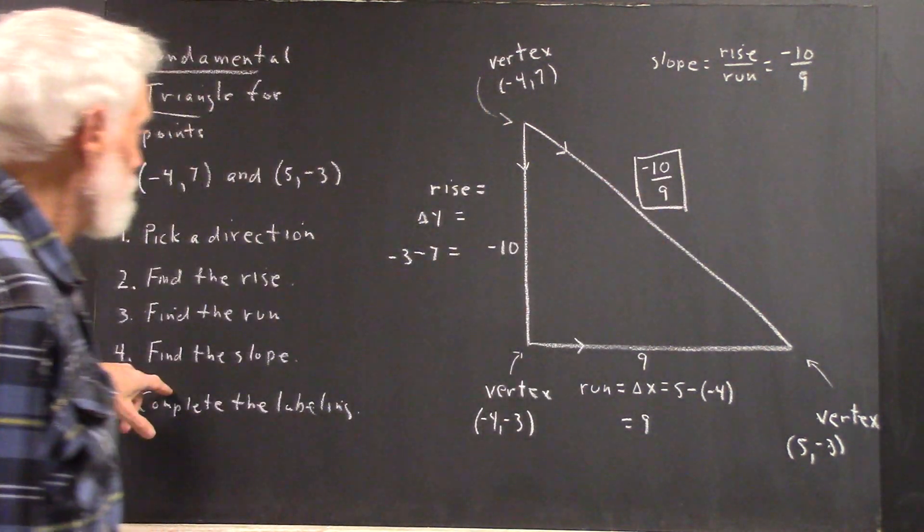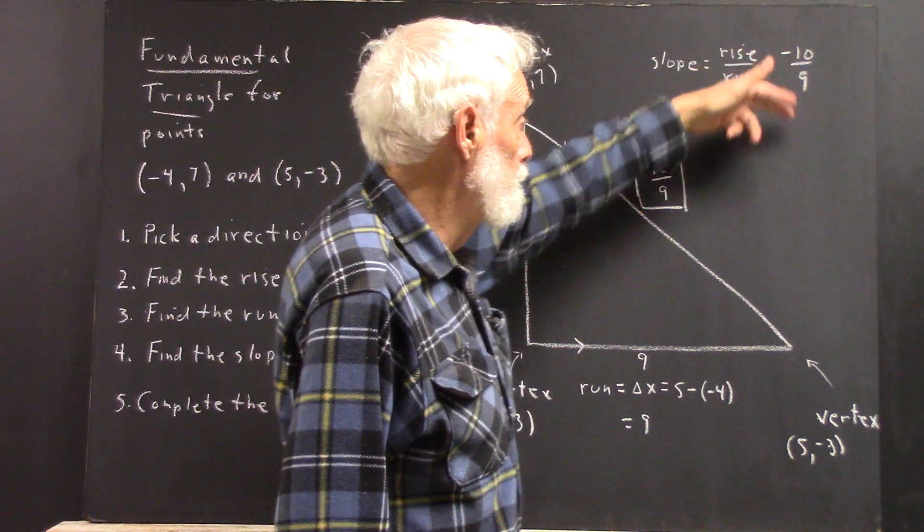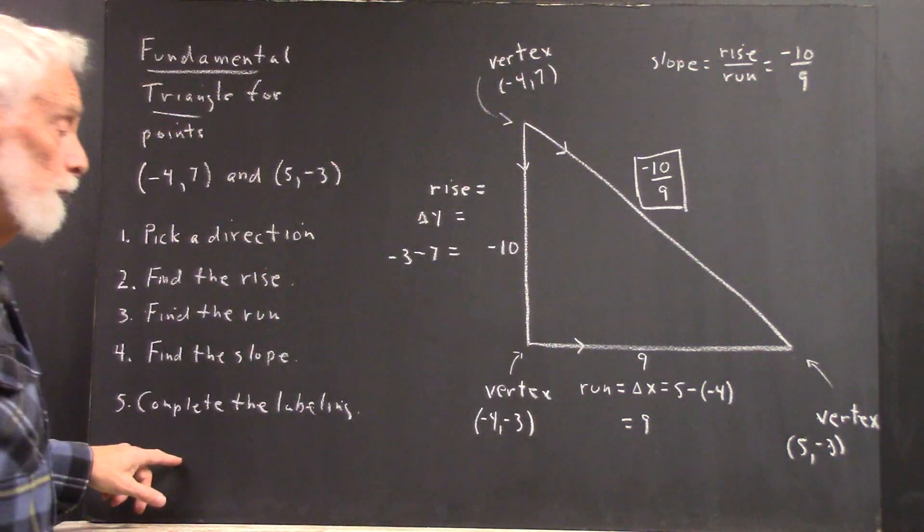And find the slope. Well, the slope is rise divided by run, negative 10 over 9. Complete the labeling.